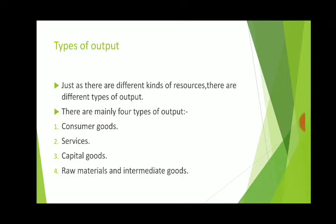As we studied in the previous lecture, productive resources are classified into four types by economics: land, labor, capital, and entrepreneurship. In the same way, there are mainly four types of output: Consumer Goods, Services, Capital Goods, and Raw Materials and Intermediate Goods.